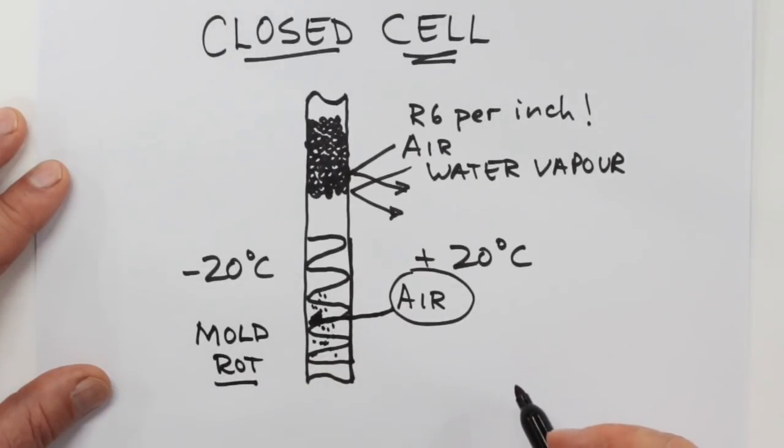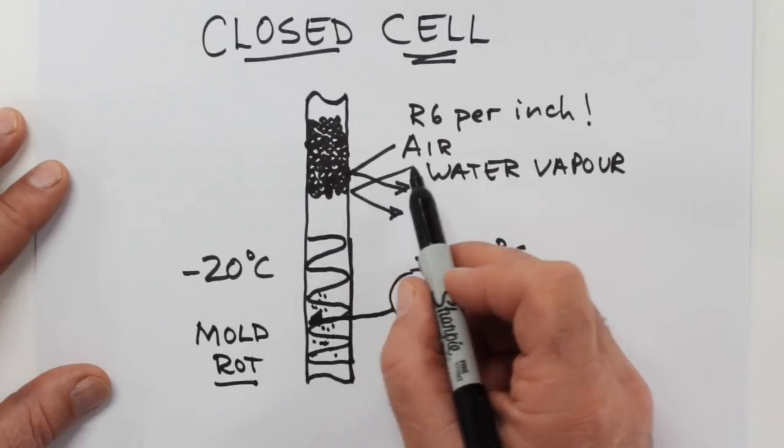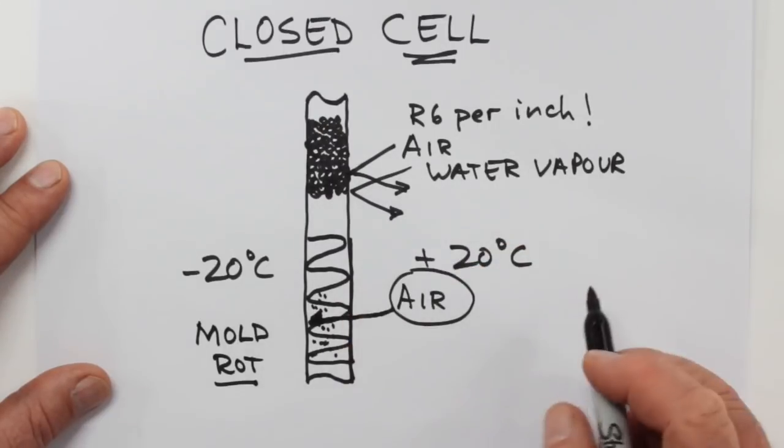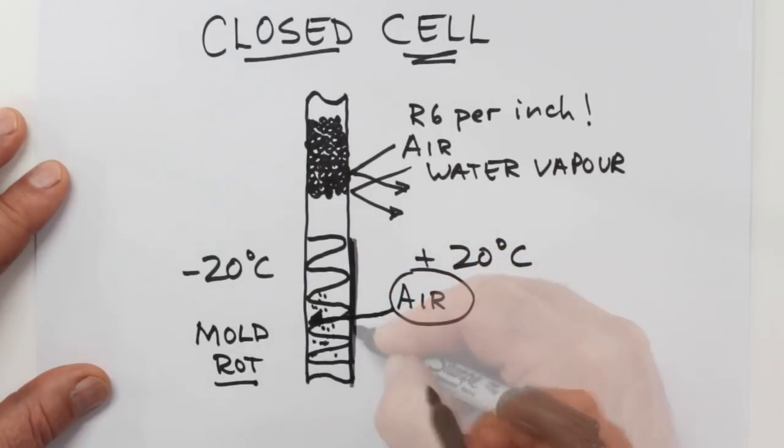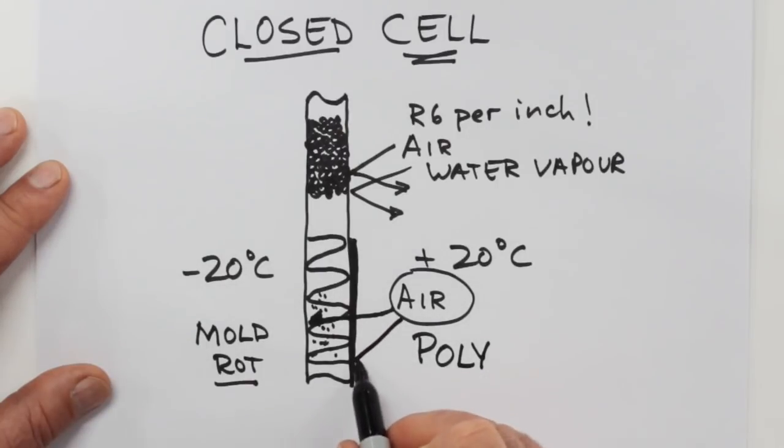Closed cell foam acts as its own vapor barrier, so moisture-laden air can't get in the wall and condense. Now if polyethylene plastic is applied to the warm side of a fiber insulated wall, it solves this problem too, but it's not always possible to apply a vapor barrier like this accurately and completely.